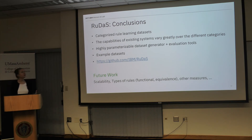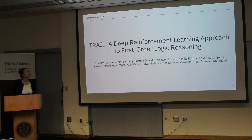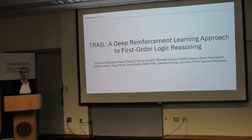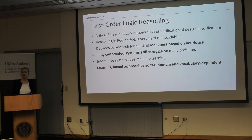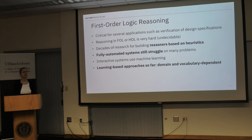In rule learning, the goal is to learn a formal knowledge base. But in logic itself, the real task of proving conjectures over such knowledge bases only begins afterward. This is what we look at in a different project. TRAIL is a reinforcement-learning-based system where we try to learn first-order logic reasoning. Reasoning is quite critical for several applications — for instance, to verify software specifications — but it is undecidable, so you can't write a sound and complete algorithm.